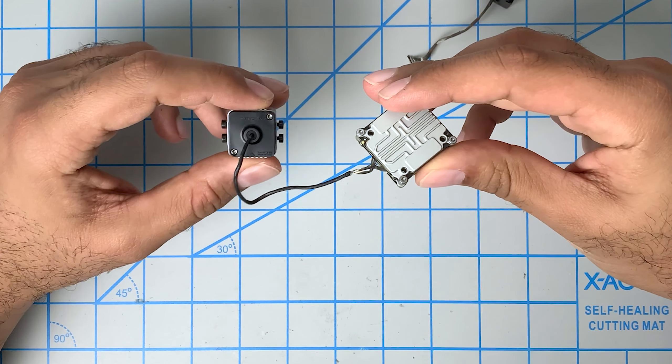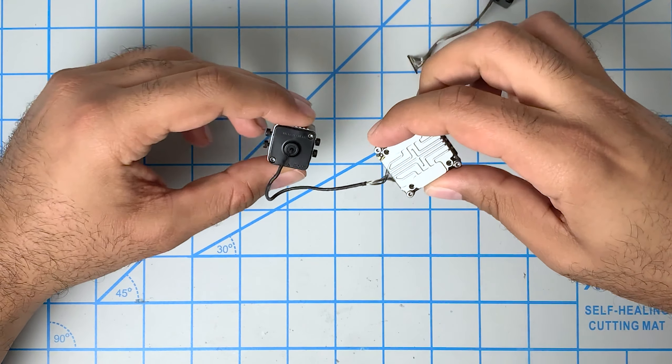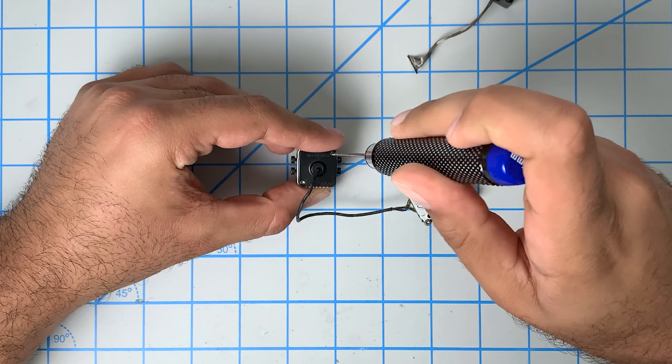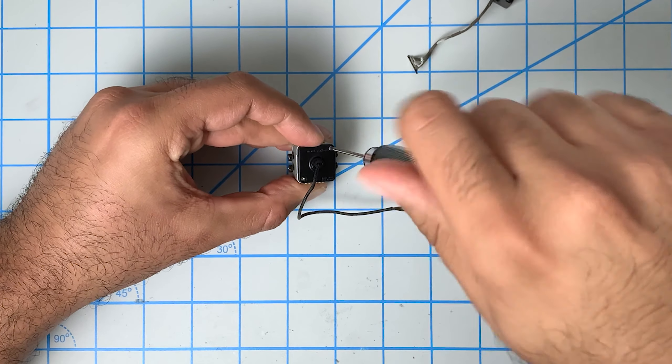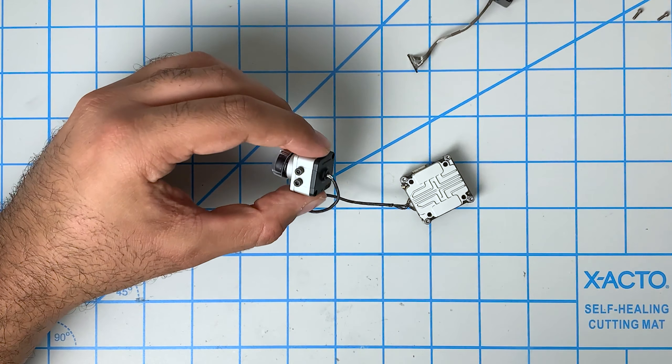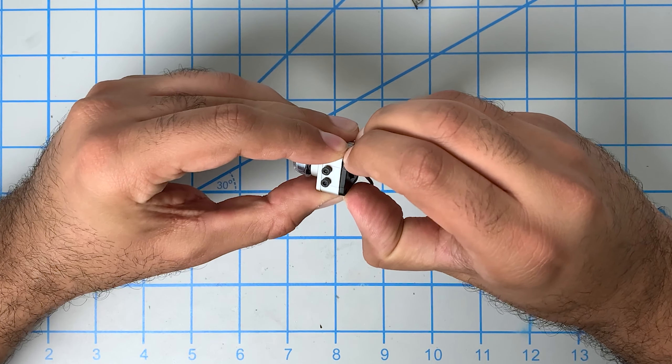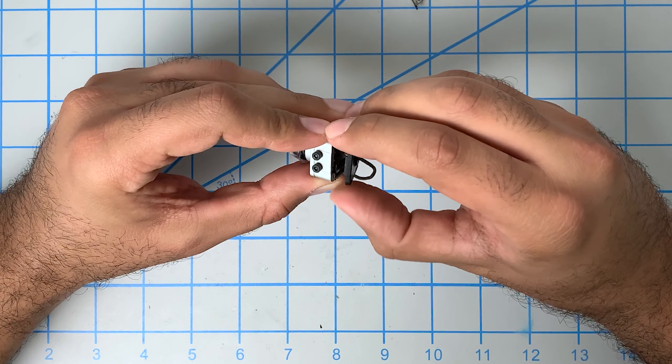The installation of the Caddx Vista is a little bit easier in some ways and a little bit more difficult in other ways. Very similarly, we're going to start by removing the back plate of the camera. So we'll remove these two screws. Now this back plate is a little bit of a tighter fit. So you may have to wiggle a little bit and just pull it out very gently.